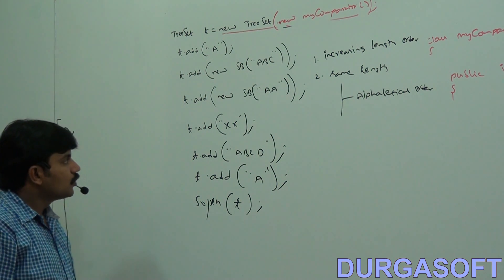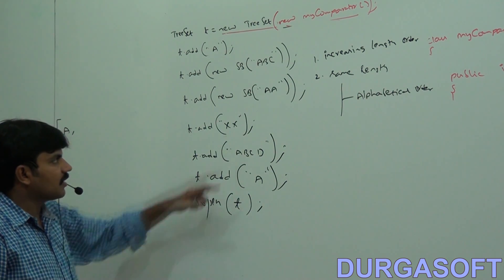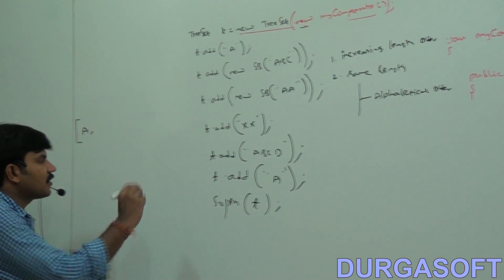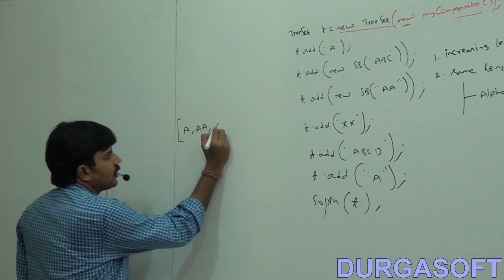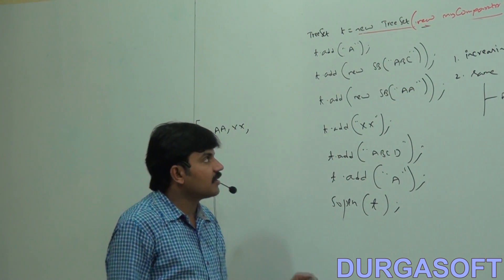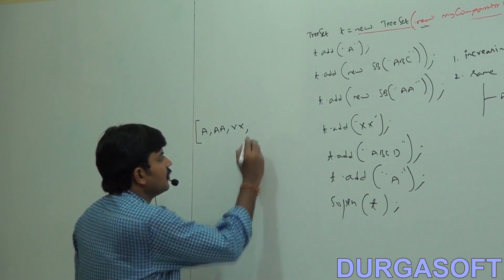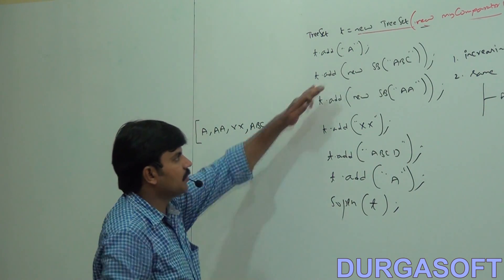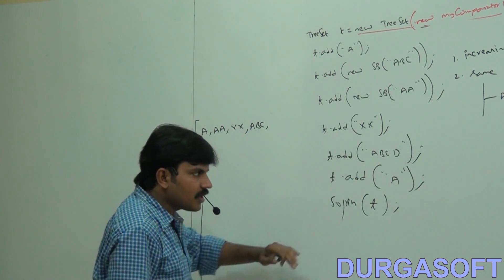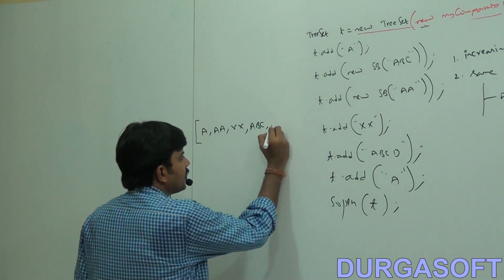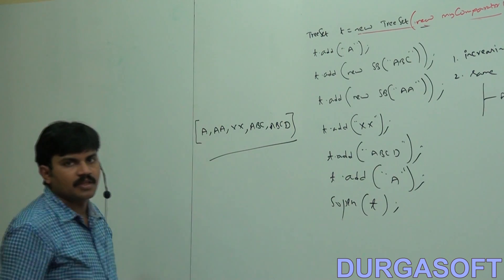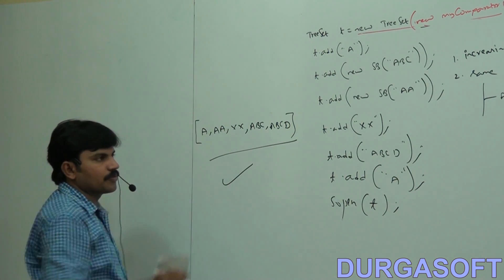Next, length two — how many are there? Consider their alphabetical order: AA, XX. Then length three — how many? ABC, there is only one. Then length four — ABCD, ABCD. Are you getting this? This is my expected output.